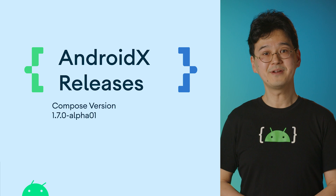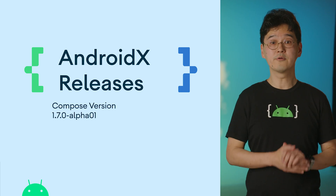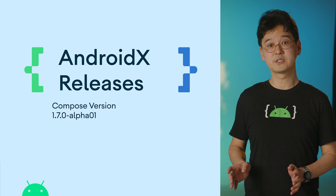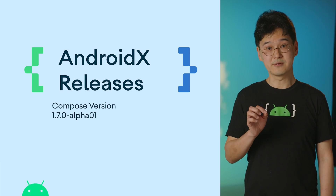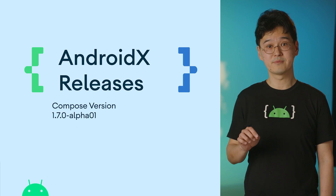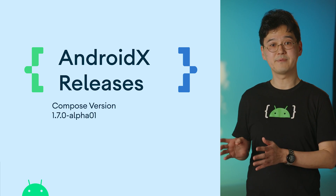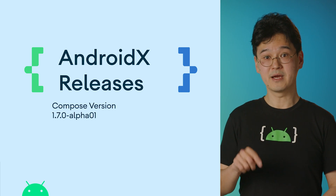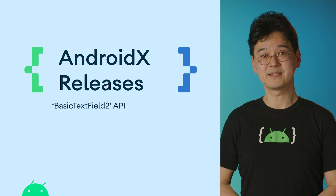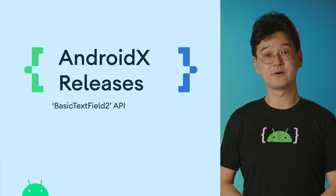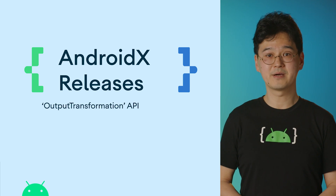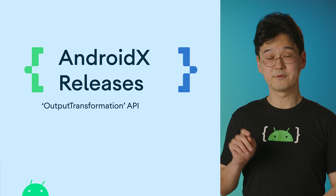We have several new releases in Jetpack libraries. Along with the January stable release of Compose, we released the first alpha version of Compose 1.7. This includes even further performance improvements from migrating Ripple to a new API. If you have customized Ripple in your app, check out the new migration document. This release also includes the experimental BasicTextField2, the next generation of Compose TextField API, with powerful new APIs many developers have requested, like the Output Transformation API.